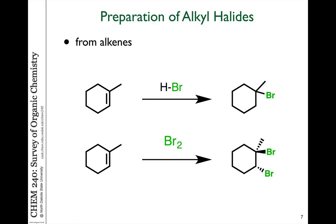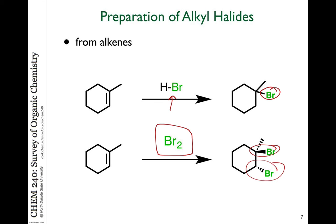In previous chapters, we talked about a couple of ways to prepare alkyl halide compounds from alkenes. For example, the simple addition of a hydrogen halide to an alkene generates a new carbon-halogen bond — adding HBr to an alkene gives a bromo compound. Or we can add diatomic halogens such as Br2, Cl2, or I2 to make new carbon-halogen bonds. In this way, we can prepare various alkyl halides to utilize in other types of reactions.